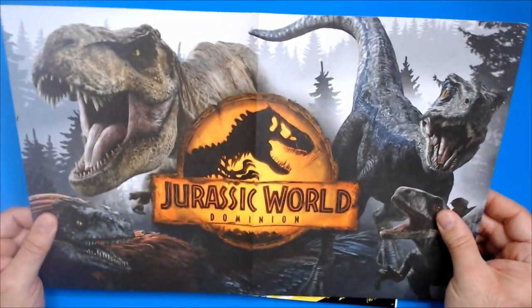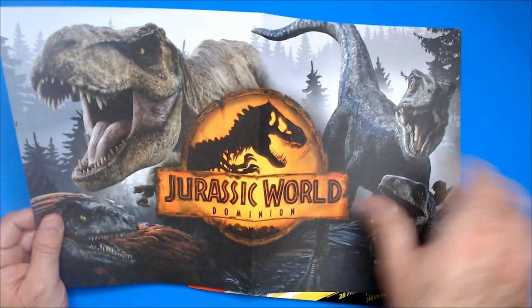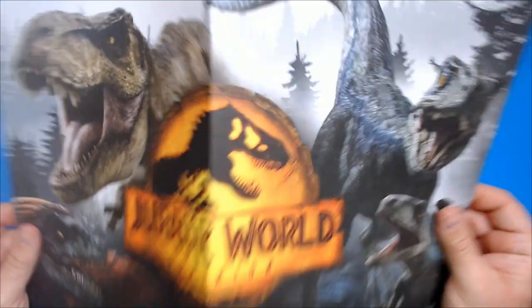So Jurassic World Dominion, a couple of dinos on there. It does look good. It would be nice to get like a four-section, four-fold-out poster, though.